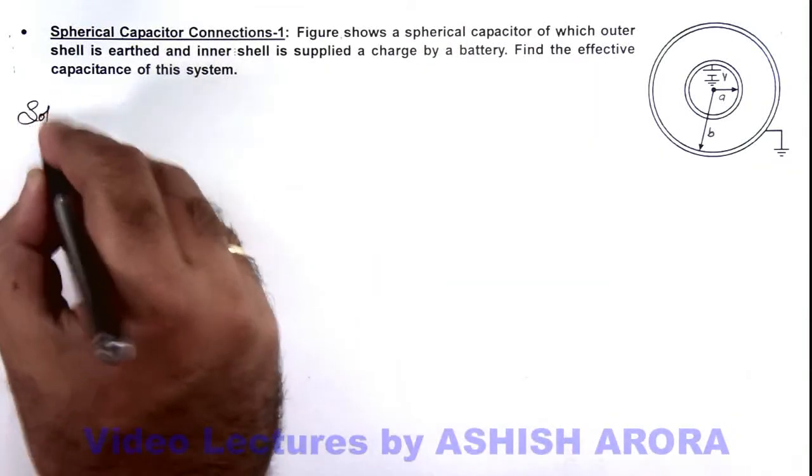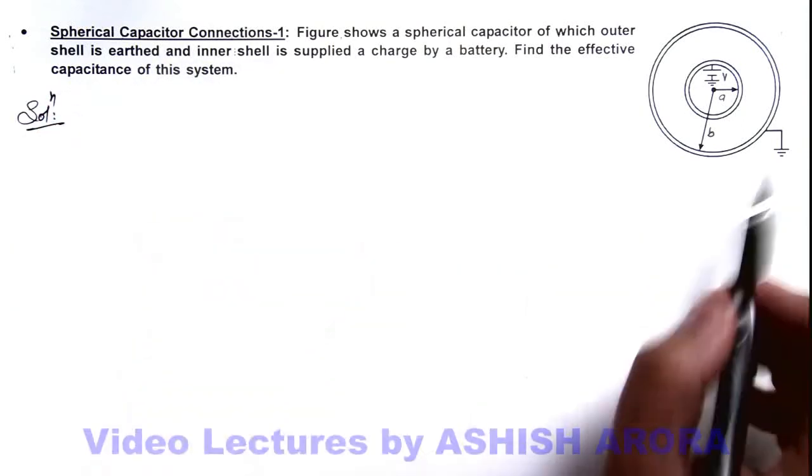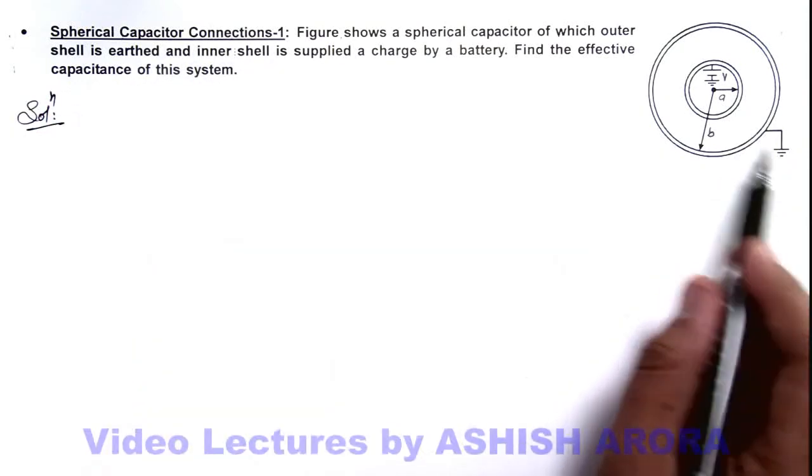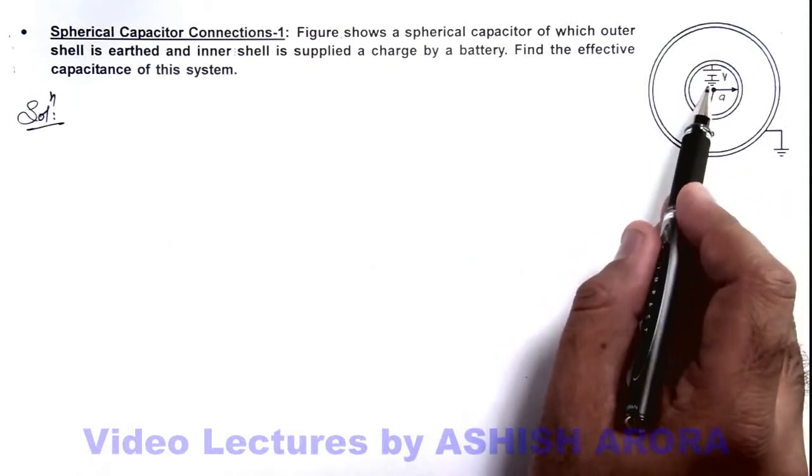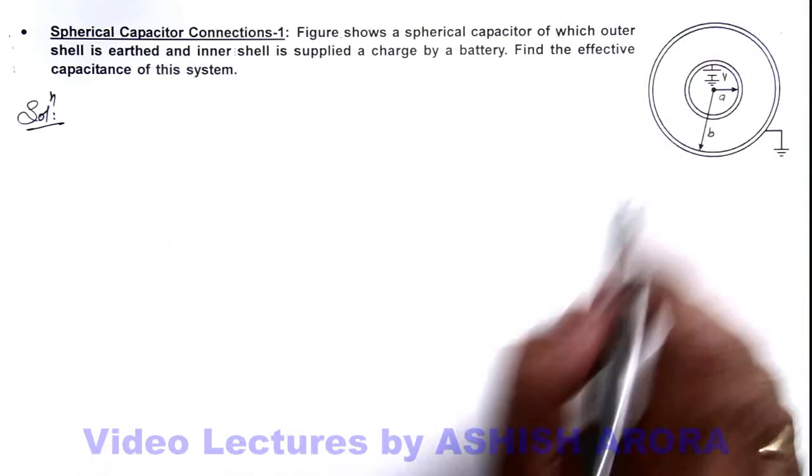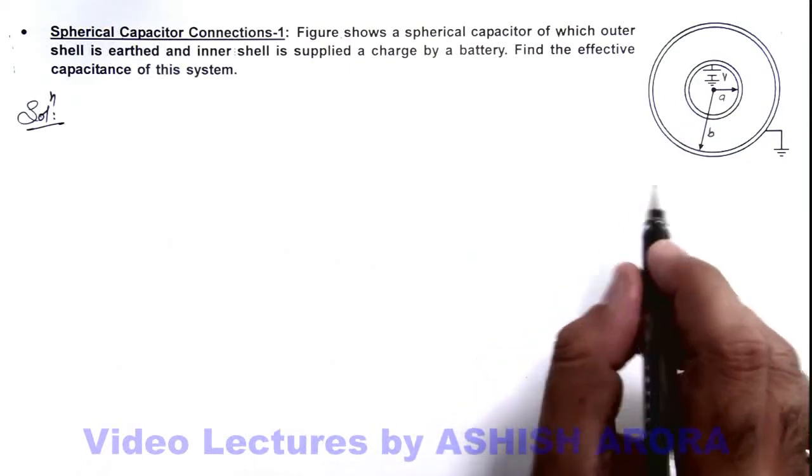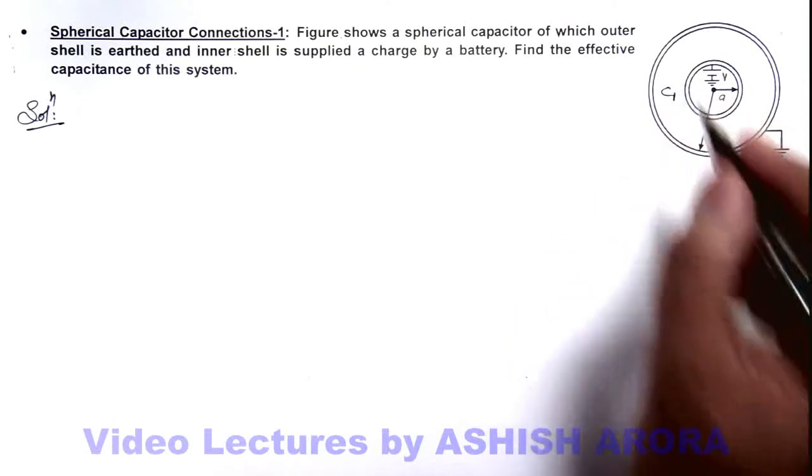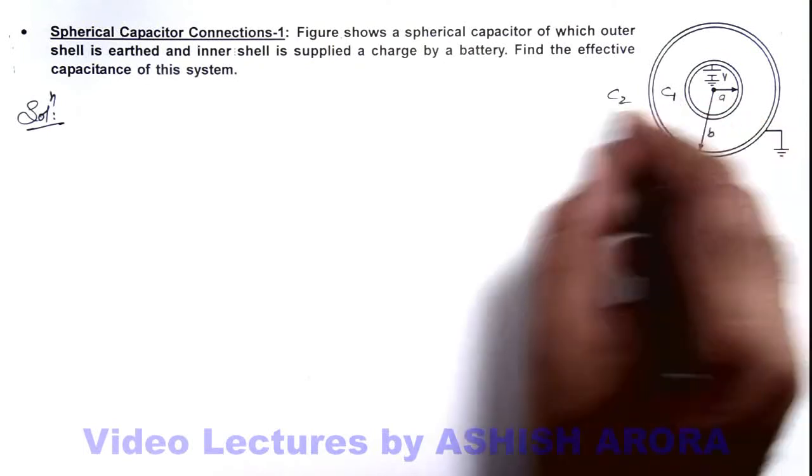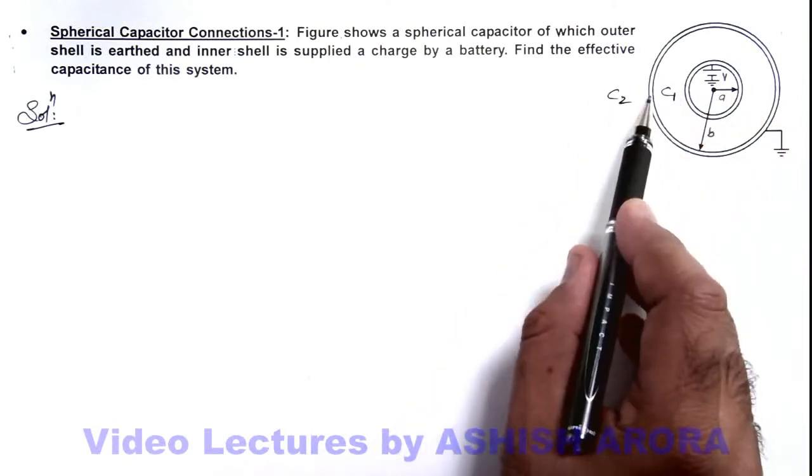Here you can see the outer shell of this capacitor is connected to earth and the inner shell is supplied with a charge through a battery. So if we draw the capacitance combination, say if C1 is the capacitance of the annular region between the two shells and C2 is the capacitance between the outer shell and infinity.